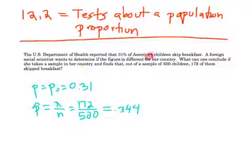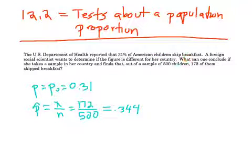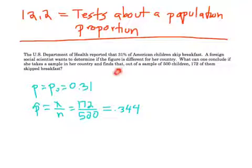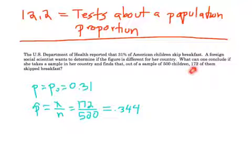I've written an example right here. The US Department of Health reported that 31% of children in the United States skip breakfast. Someone from another country wants to determine if that figure is different for her country. She takes a sample, and of the 500 children in her sample, 172 of them skipped breakfast. So the question is, what can she conclude?